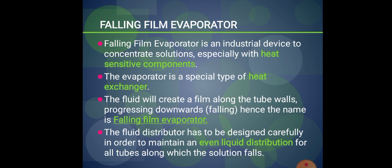Falling film evaporator is one of the equipments used to concentrate solutions, and it is specially used for heat sensitive components. This falling film evaporator is a special type of heat exchanger. Heat exchangers are equipments used in pharmaceutical industries for transfer of heat — from steam to liquid, or from gas to liquid.